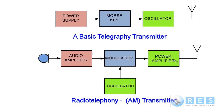This last slide shows the two transmitters we've been talking about. The basic telegraphy transmitter needs a power supply — by the way, there's no power supply shown in our AM transmitter, but there would be one; in your assessment no power supply will be drawn. Basic telegraphy transmitter: power supply supplying all the power, a Morse key to turn the carrier produced by the oscillator on and off. The oscillator produces radio frequency energy, the Morse key turns the oscillator on and off, and the power supply supplies all the power. That's a radio telegraphy transmitter.